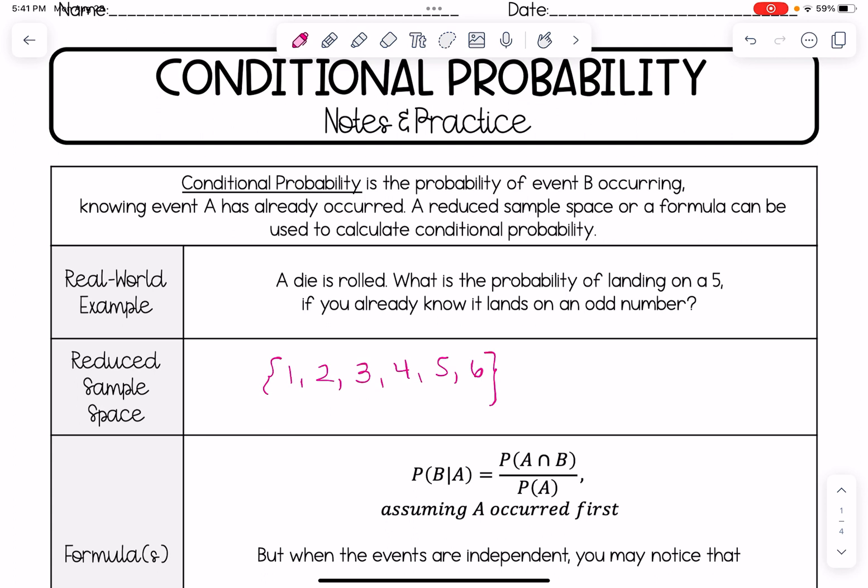But we already know that it lands on an odd number. So 2, 4, and 6 are removed from the sample space. If you look what's left, there are three values, three elements left in the sample space. And one of them is a 5. So we would get 1/3 as our answer.